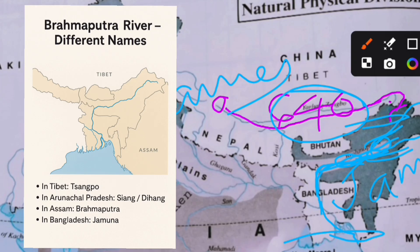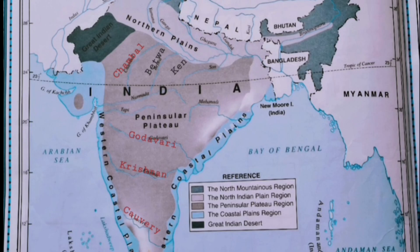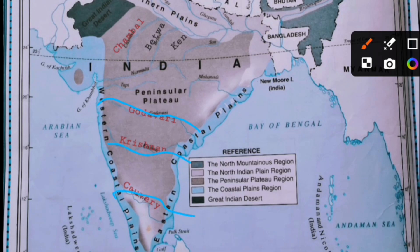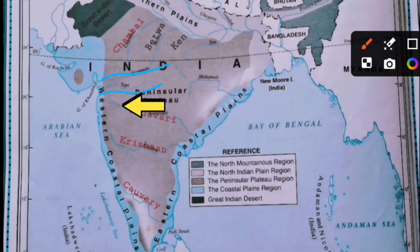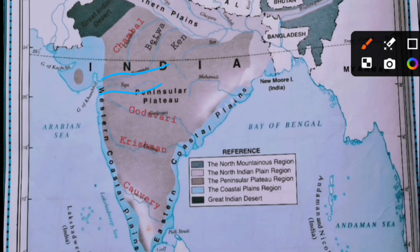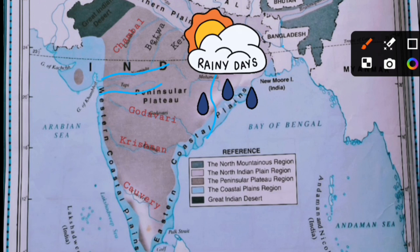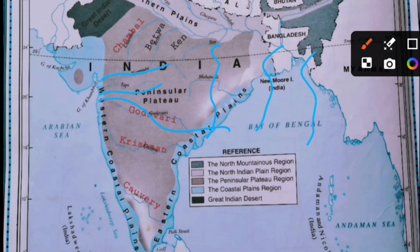Now, peninsular rivers — these rivers flow from west to east. The major ones are Godavari, Krishna, Kaveri, and Mahanadi, and they flow into the Bay of Bengal. Except Narmada and Tapi, which flow towards the west and join the Arabian Sea. Peninsular rivers are not perennial — they flow mainly during the rainy season.